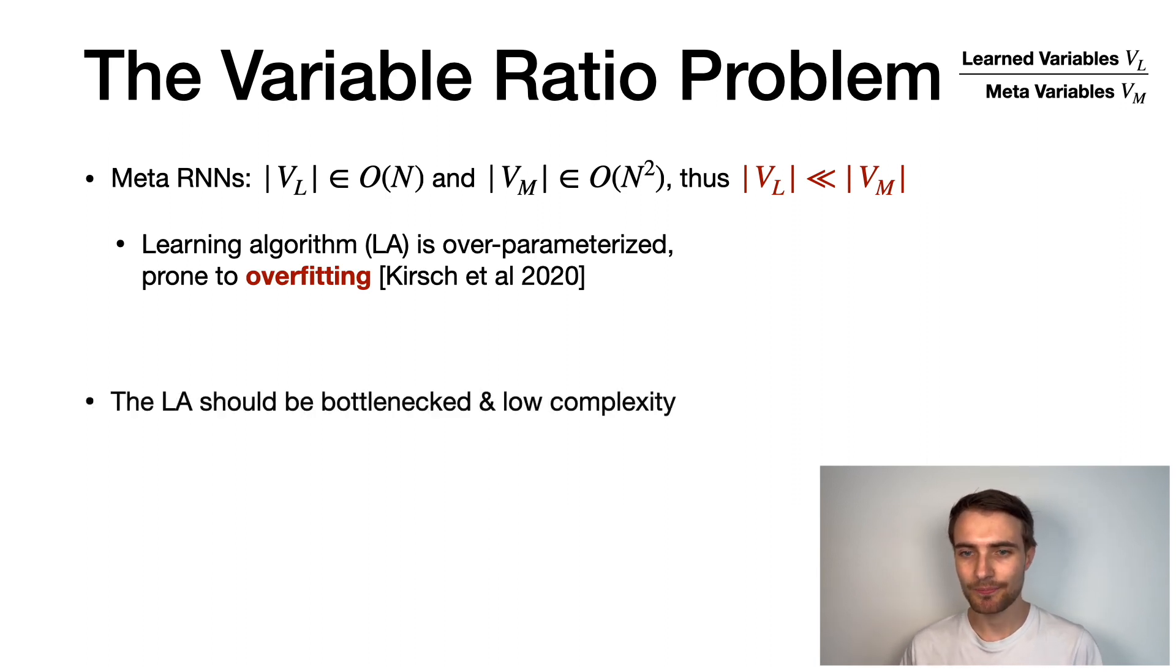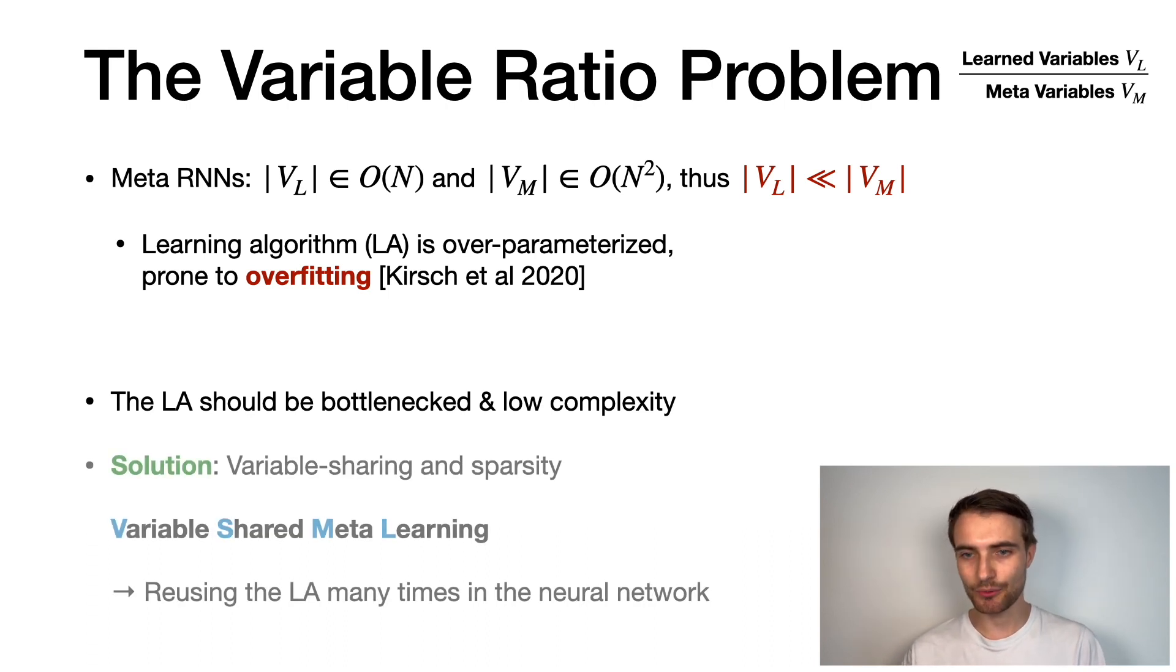So how can we fix this problem? We would want the learning algorithm to be bottlenecked and of low complexity. And we propose to introduce variable sharing and sparsity into the neural network, essentially reusing the learning algorithm in many parts of the network. We call this variable shared meta-learning, or VSML for short.